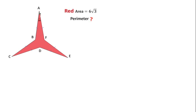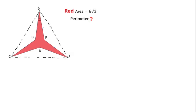First, I will connect C to A, C to E, and E to A. This is actually an equilateral triangle ACE. I will consider the side of this equilateral triangle as A. There are also three isosceles triangles in this question. If I consider this side length as S, then this side will also be S.